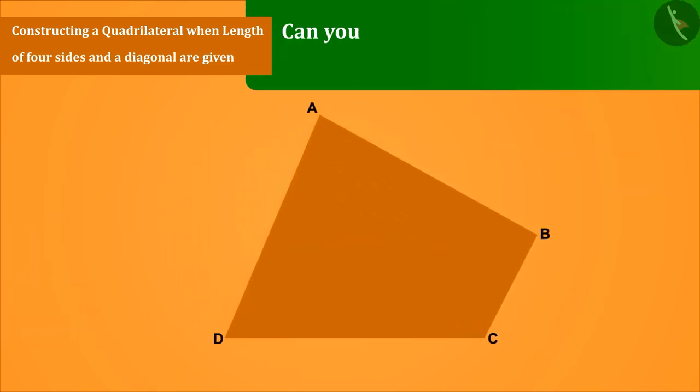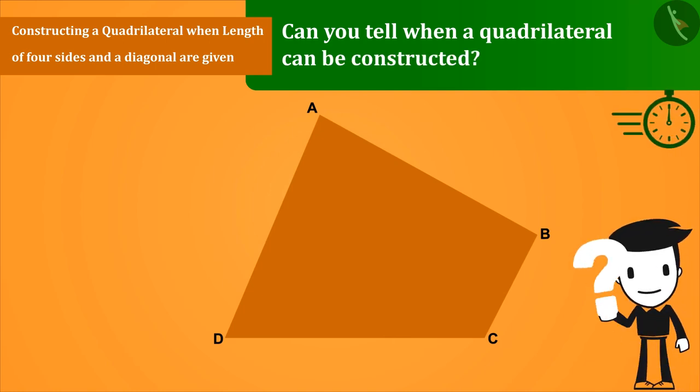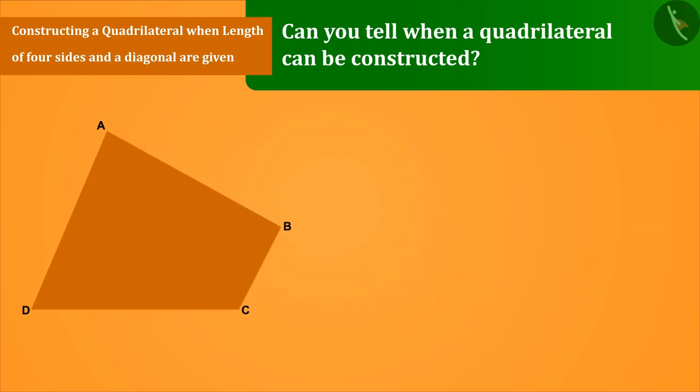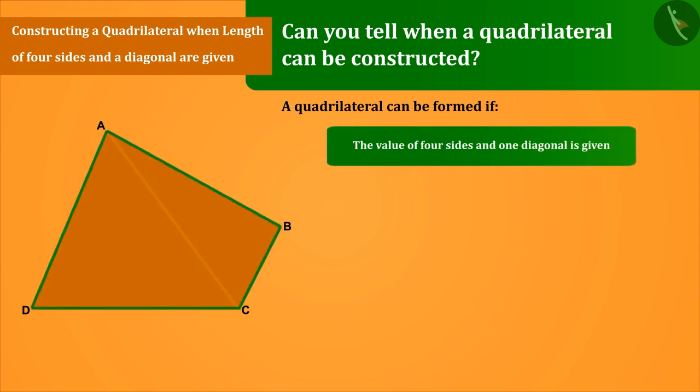Can you tell when a quadrilateral can be constructed? So let's write something like this. A quadrilateral can be formed if the value of four sides and one diagonal is given.